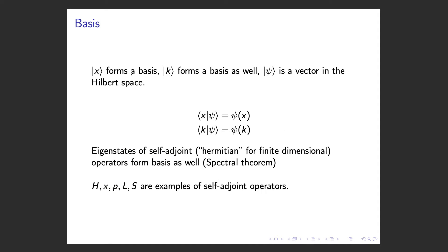When you have a vector space, it is often useful to talk about the notion of a basis. When you see the ket vector, it is a vector — an element of the Hilbert space. So the quantum state is described by this ket vector.